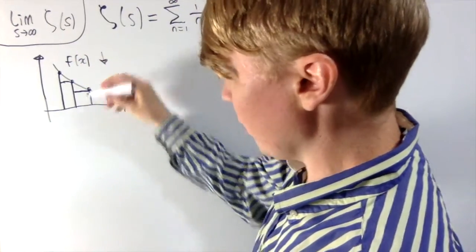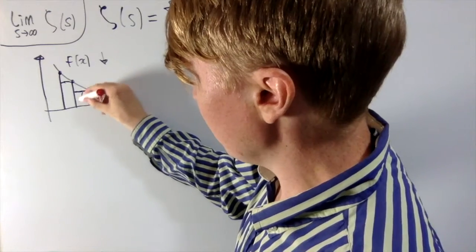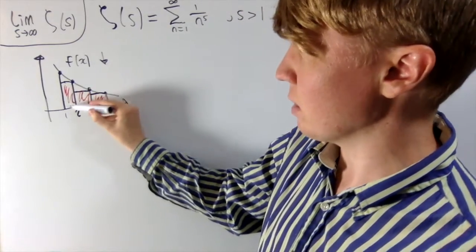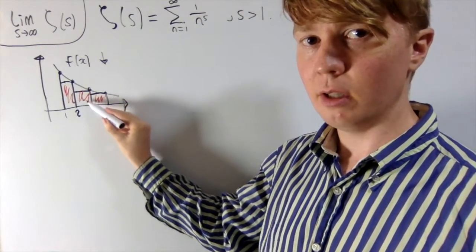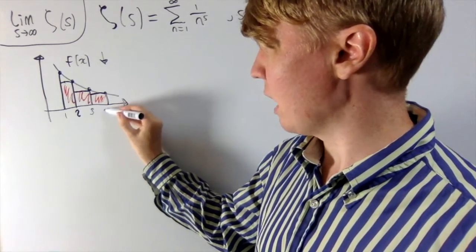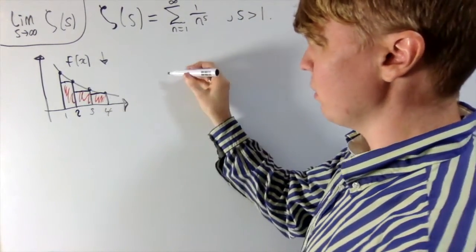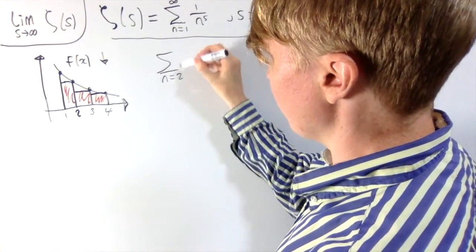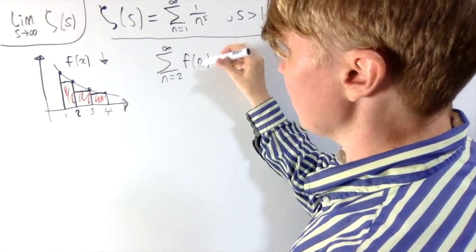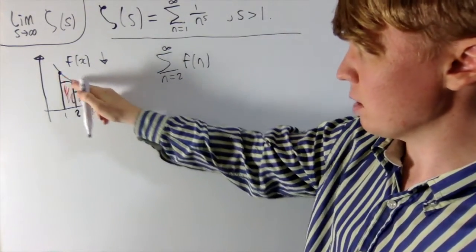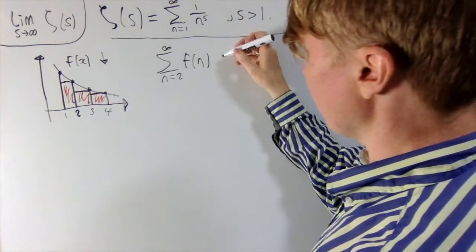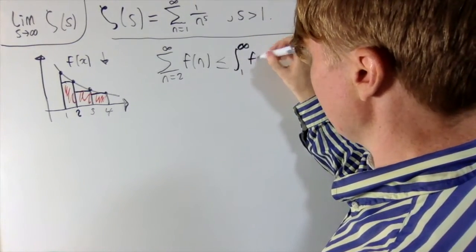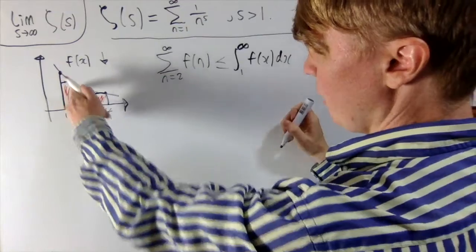So if you look at the area of these rectangles here, what have we got? Well, so here we've got, this is f of 2 is the height of this and the width is 1. So the area of this is just f of 2. The area of the next one is f of 3. And the area of the next one is f of 4, and so on. So from this sort of proof by picture, you can see that the sum from n equals 2 to infinity of f of n, as long as it's a non-increasing function, this is less than this integral here from 1 to infinity of the function. Less than or equal to this. You can see there's always this little bit of area on top left out.